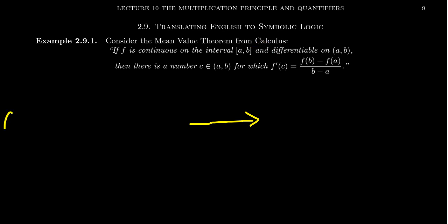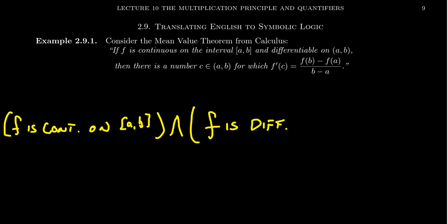So we get something like the following. f is continuous on the interval a to b. That's our first statement. I'm going to erase my arrow. We'll put another one on the screen in just a second. But we get the and, like so. Then we have this other statement. f is differentiable on the interval a to b. So these are the hypotheses of the mean value theorem.